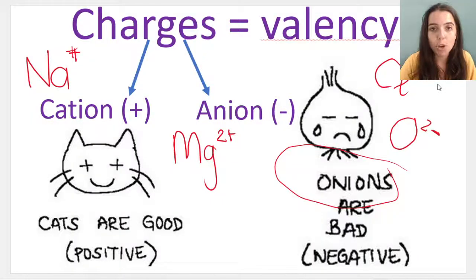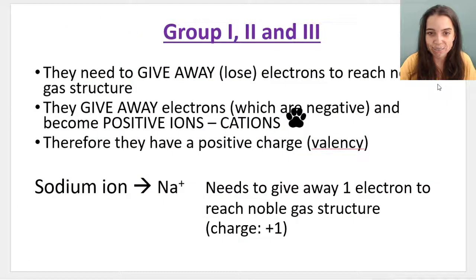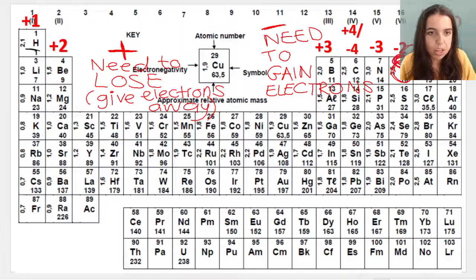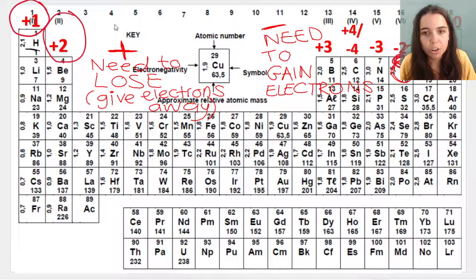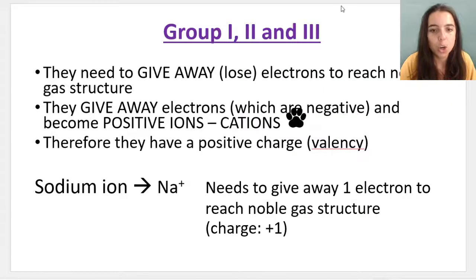Right. So what have we learned? We learned that charges form when atoms that are neutral gain electrons or lose electrons. You can form anions or cations. Positives are the cations. Negatives are the anions. Group one, two, and three. They form cations, which means they give away electrons to reach noble gas structure. They're giving away the negative. So they become positive.